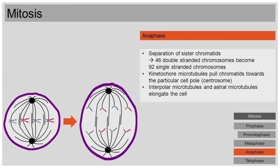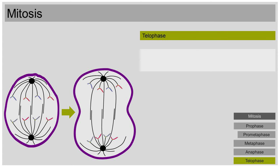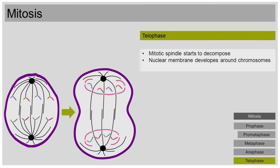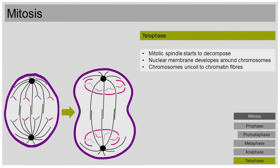Now we're almost done. The last phase of mitosis is called telophase. There are now 46 single-stranded chromosomes around each centrosome. Now the mitotic spindle begins to decompose. Nuclear membrane is developed around the chromosomes at the two cell poles. Finally, the chromosomes uncoil into their original state. They reorganize into chromatin fibers.